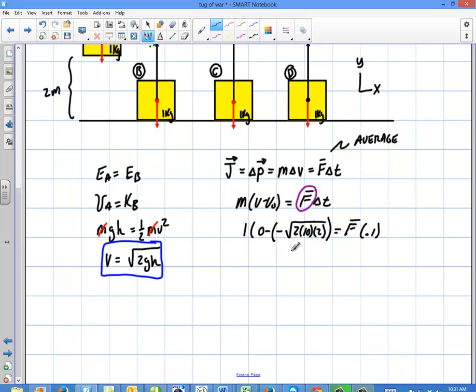So what am I going to end up getting there? I'm going to simply end up getting the square root of 40 equals average force times 0.1. So the average force, I can take out a 2 out of this and make that 2 root 10, 2 root 10 over 0.1.